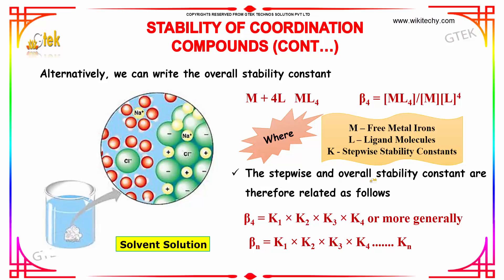The stepwise and overall stability constants are therefore related as follows. Beta4 is equal to K1 times K2 times K3 times K4 or more generally, betaN is the product up to KN. This is how the stability of coordination compounds.